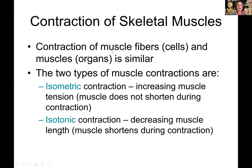We're going to start by talking about contraction of whole muscles. Physiologically, how a whole muscle contracts is the same way as how one cell contracts — it's just lots of cells doing it at once. There are some terms we need to walk through. There are actually two types of muscle contractions when looking at, say, your bicep contracting.